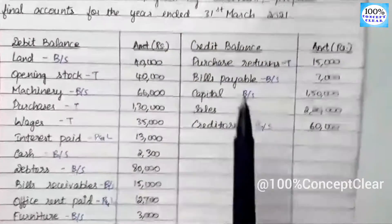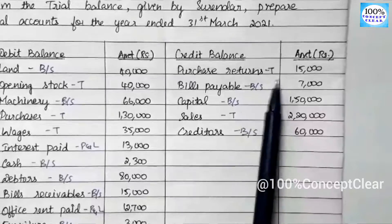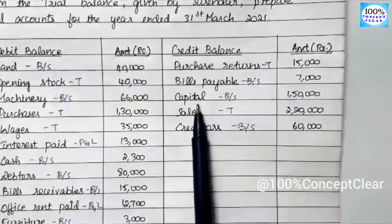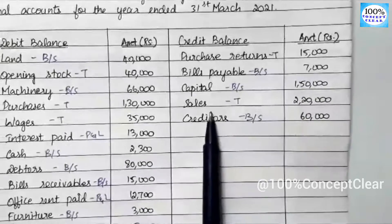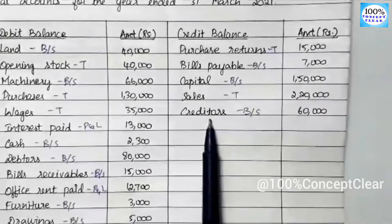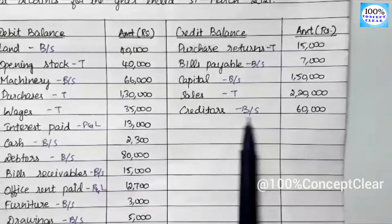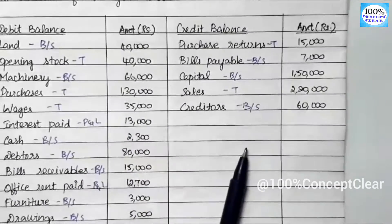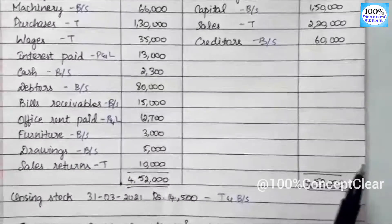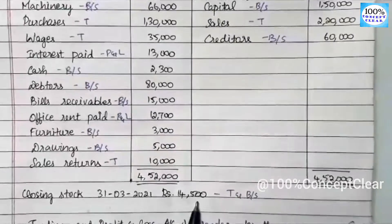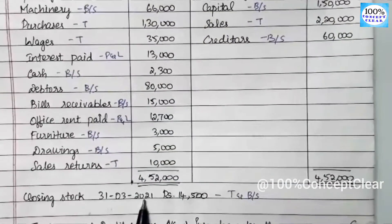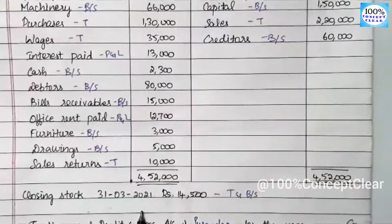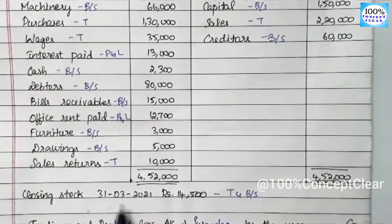Next we have the credit side. We have the purchase return — this is the trading account. Bills payable is the balance sheet. Capital is the balance sheet. Sales is the trading account. Creditors is the balance sheet. This is all the information we have to get from the trial balance. There is also a trial balance sheet and a new account sheet with adjustments.